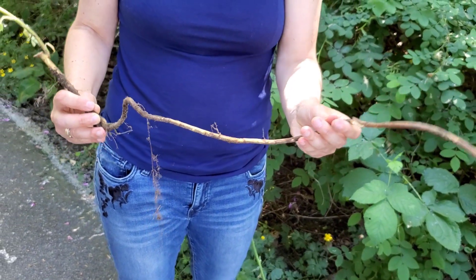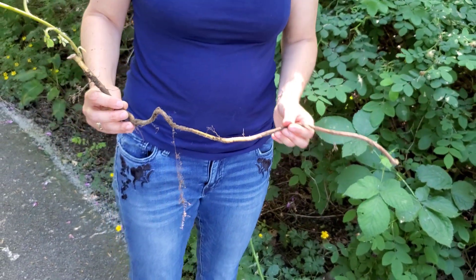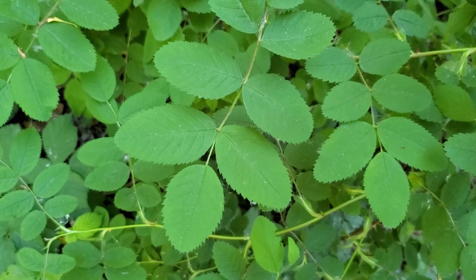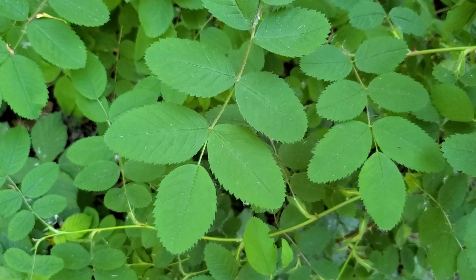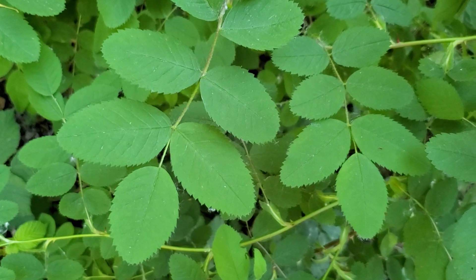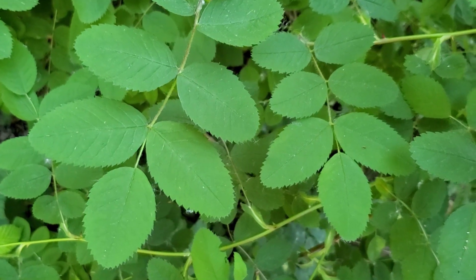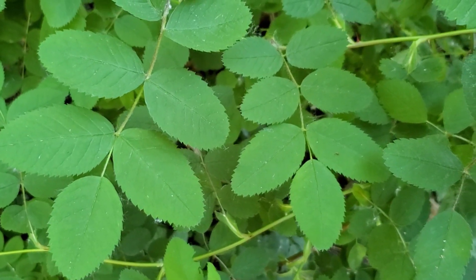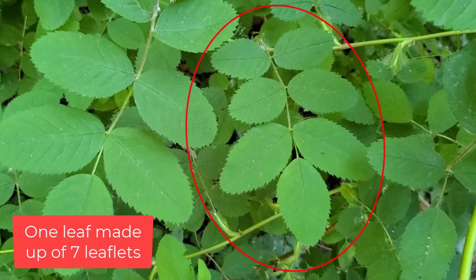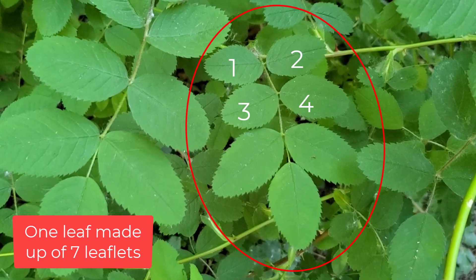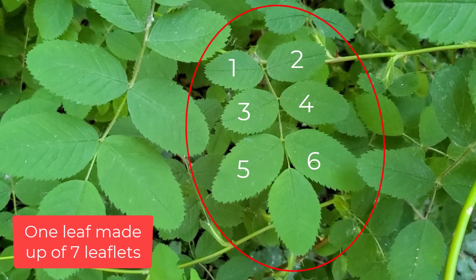The way to differentiate roses, or to identify them to begin with, is that they have compound leaves. Looking at this leaf here, you'll see that this is one leaf made up of seven leaflets: one, two, three, four, five, six, and seven.